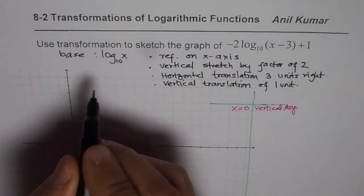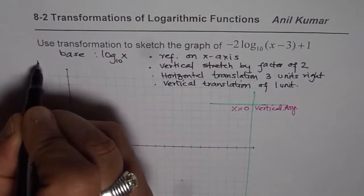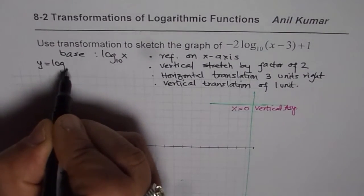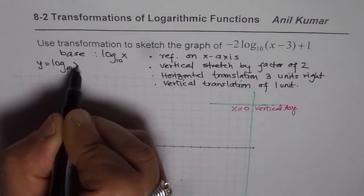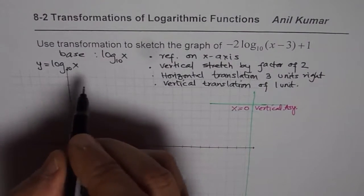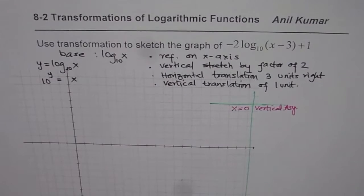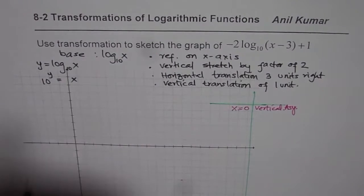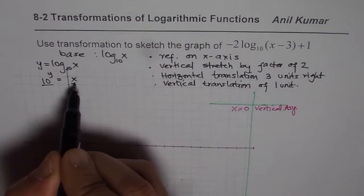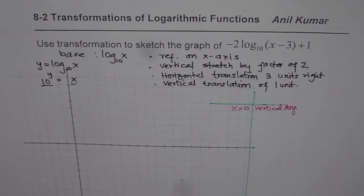We can also write this function as: when y equals log to the base 10 of x, we also mean that 10 to the power of y equals x. So that gives you a hint — x values are 10 to the power of something. Always take points which are 10 to the power of something.